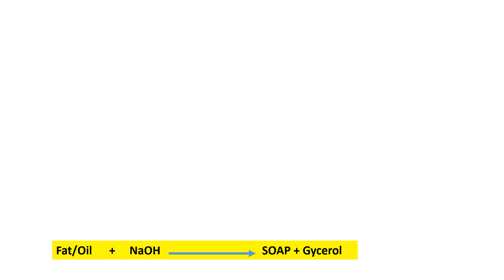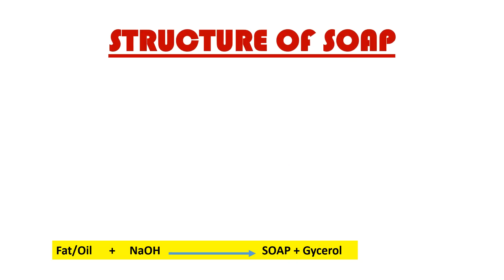Today we are looking at soap, and in the previous sessions we said that soap majorly comes from the reaction between a fat or oil reacting with sodium hydroxide — what you call lye — or potassium hydroxide, to form soap and glycerin. And before you understand how soap works, we need to first know the structure of soap.